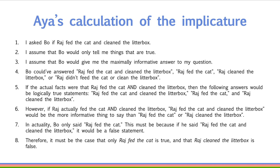If the actual facts were that Raj fed the cat and cleaned the litter box, then the following answers would be logically true statements: Raj fed the cat and cleaned the litter box; Raj fed the cat; and Raj cleaned the litter box. However, if Raj actually fed the cat and cleaned the litter box, then saying so would be more informative than saying only Raj fed the cat or Raj cleaned the litter box. In actuality, Bo only said Raj fed the cat. This must be because if he said Raj fed the cat and cleaned the litter box, it would be a false statement. Therefore, it must be the case that only Raj fed the cat is true and that Raj cleaned the litter box is false.